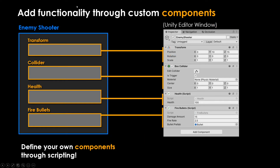With our empty container and base level information, we can define a game object to do whatever we want by adding more components. For example, an enemy shooter game object could have a transform, a collider to detect collision with player bullets, a health component to track remaining health and take damage, and then a script to fire bullets. We handle each of these behaviors inside of these scripts — anything related to health would be here, and combat behavior for firing bullets could be handled in another component.